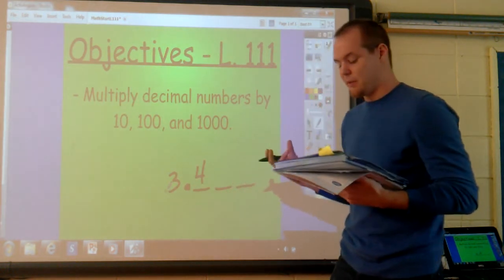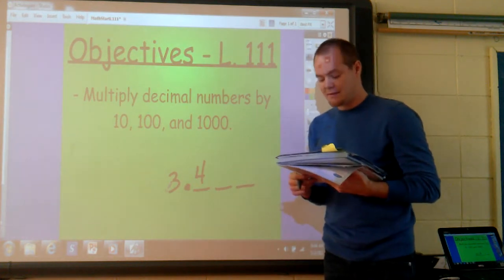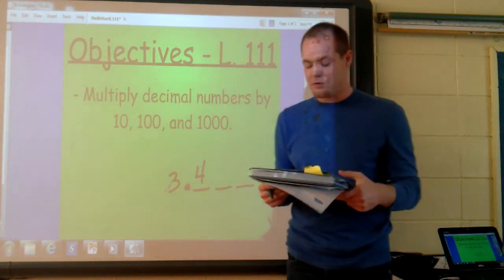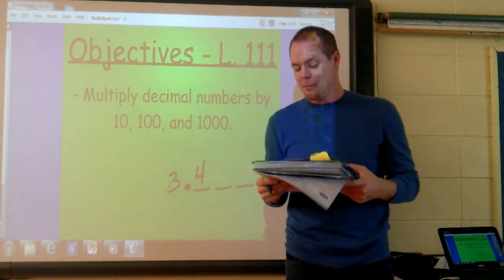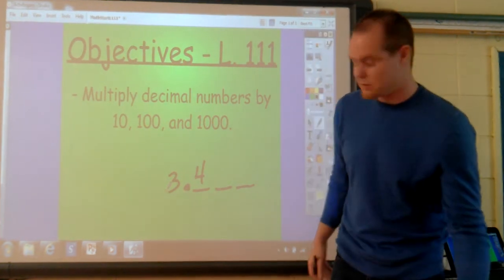The decimal point holds steady while the digits move. Although it is the digits that change places when the number is multiplied by 10, we can produce the same result by moving the decimal point in the opposite direction.